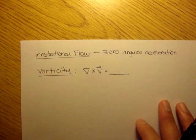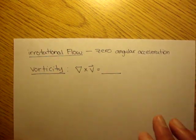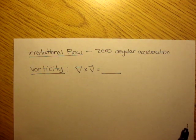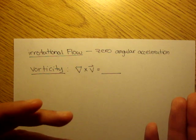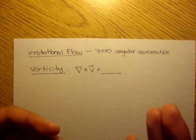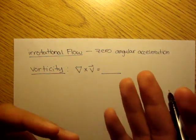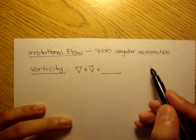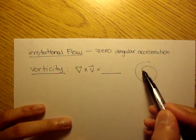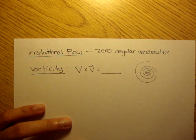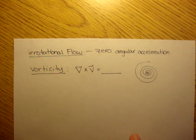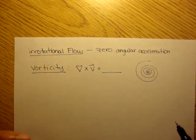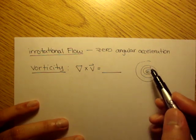Think of vorticity as spinning fluid. When you fill up your kitchen sink with water and then unplug it and let it drain, you see around the drain hole that the water spins. You've all seen that before, or in a bathtub, or even in a toilet when you flush it.